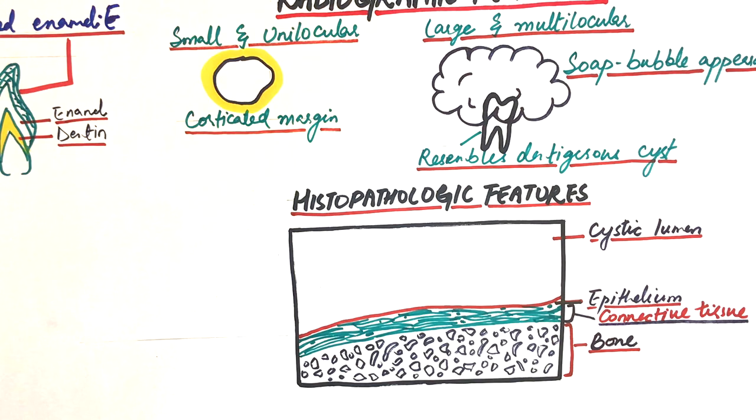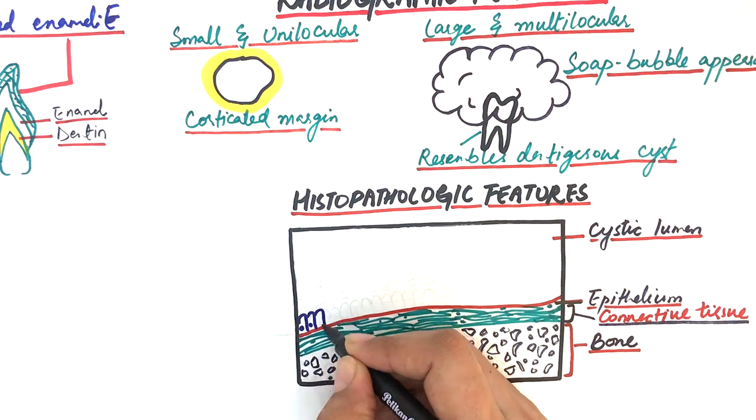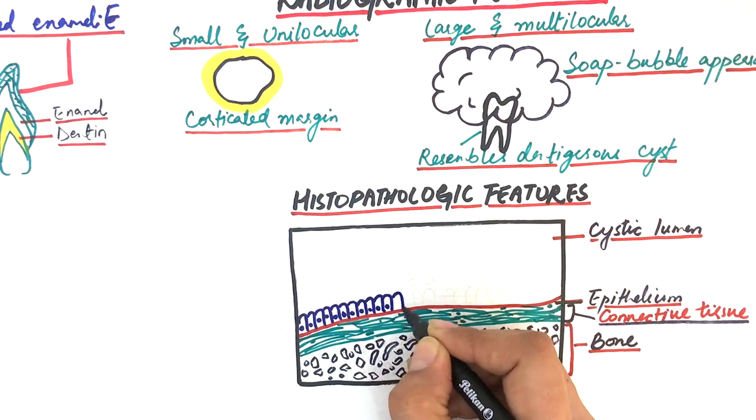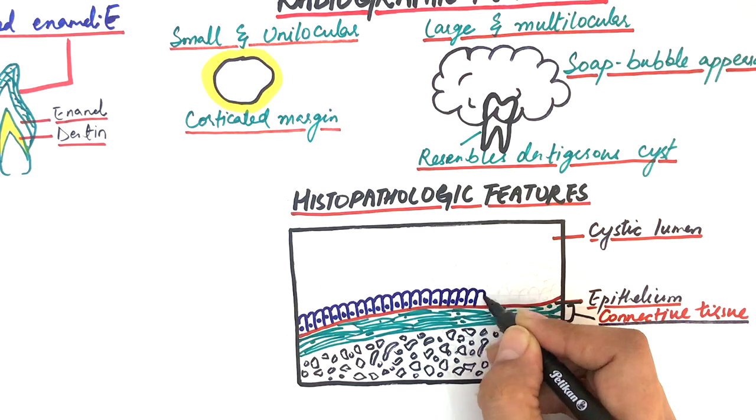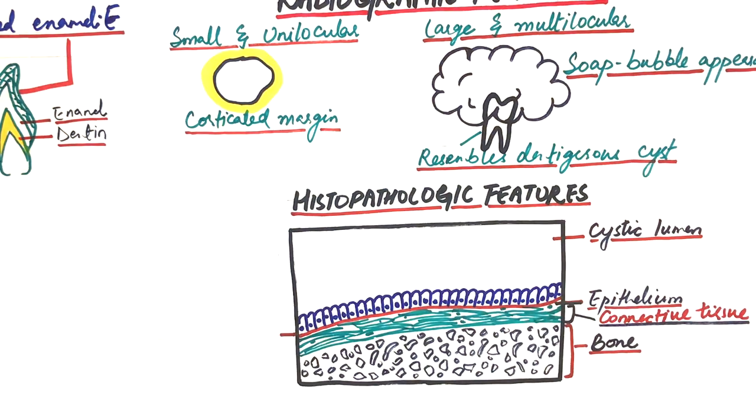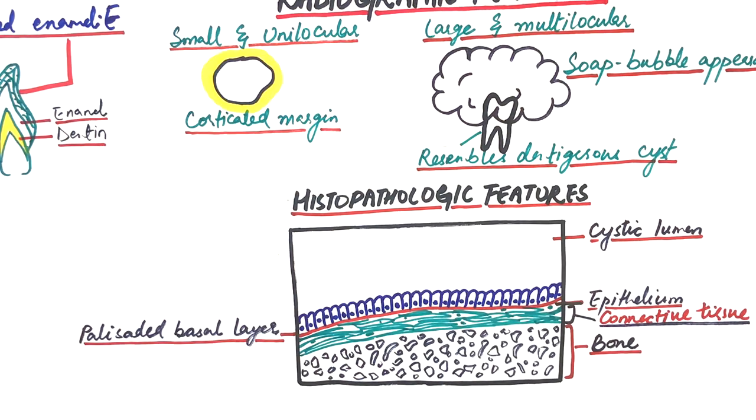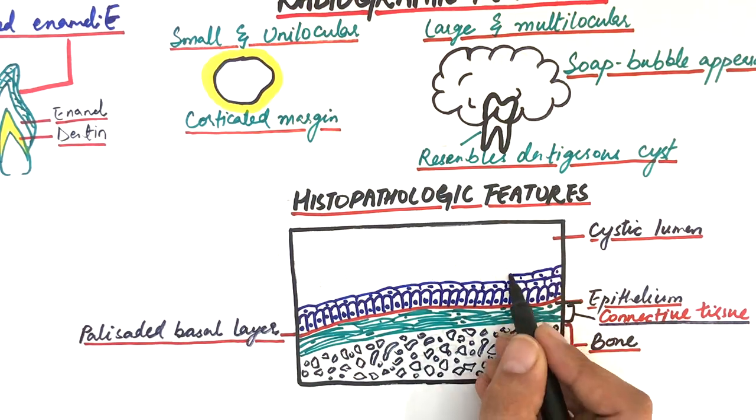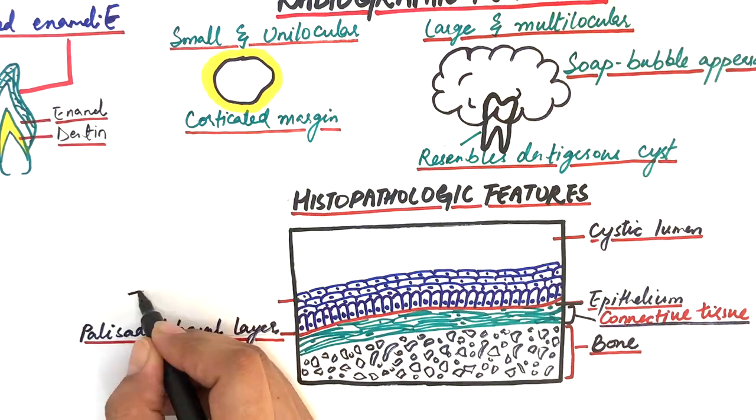The epithelium is usually 6 to 8 cells in thickness and without any rete ridges, which makes the interface of the epithelium and fibrous wall completely flat. The basal cells of the epithelium are composed of a palisaded layer of cuboidal or columnar epithelial cells.